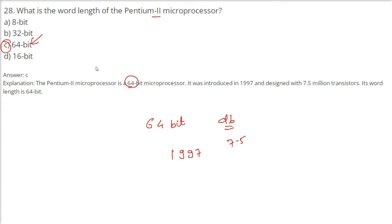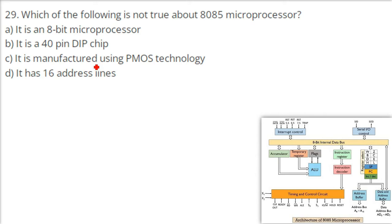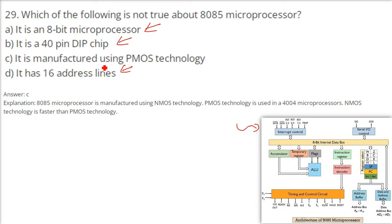Which of the following is not true about the 8085 microprocessor? The 8085 is an 8-bit microprocessor, has 40 pins, 16 address lines, and 8 data lines. The answer is PMOS — it is not true — because the 8085 microprocessor is manufactured using NMOS technology. PMOS technology was used in the 4004 microprocessors. NMOS technology is somewhat faster than PMOS.